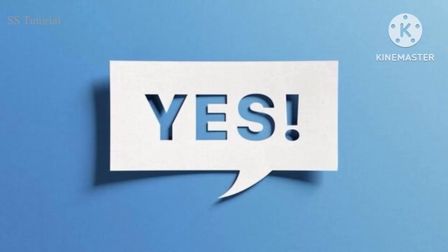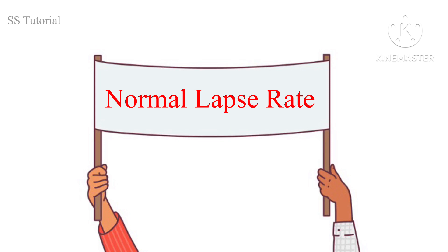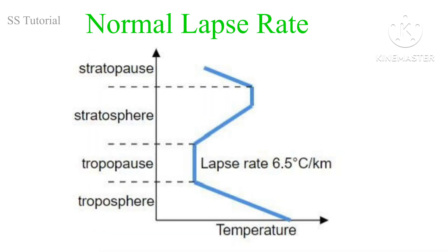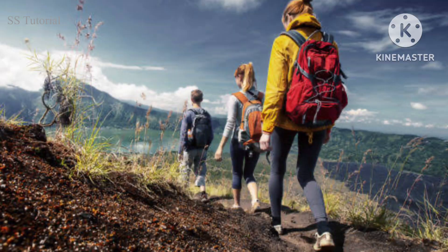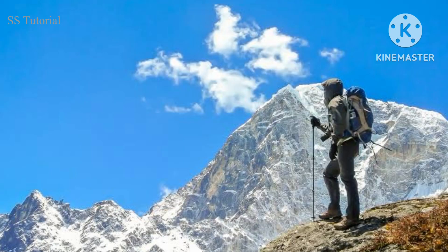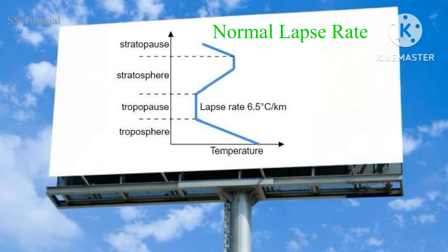The reason is normal lapse rate. Under favorable conditions, almost 6.5 degrees centigrade temperature decreases at every thousand meters in the troposphere, which is known as the normal lapse rate of temperature. That's why the higher we climb, the colder it gets — so we feel cold in the mountains and there is snow on the peak of many mountains as it reaches below the freezing point. It is now clear that due to the normal lapse rate, temperature decreases.